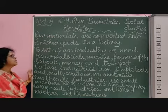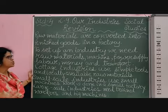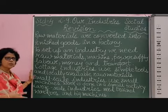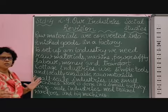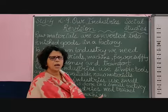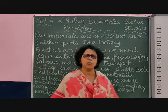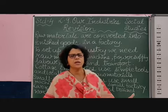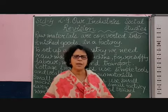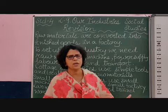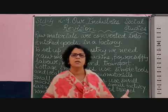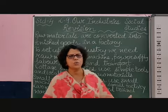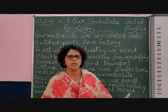Raw materials are converted — that is, changed — into finished goods in a factory. Take an example of the mobile phone which you are using; that is also made in an industry. The pen you are using is also made in a factory. The furniture you are using is also made in a factory or industry.